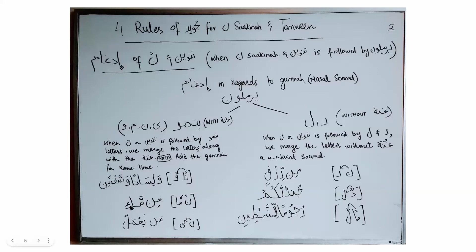In the next example, Min-ya-amal: when merging letter Noon with Ya, Ya and Noon letters coming after Noon Sakina or Tanween require merging along with the Gunna. I merge letter Noon with Ya, hold the nasal sound, and say: Min-ya-amal. For Min Nutufatin — merging letter Noon followed by another Noon — you hear the Gunna; hold it for some time and recite: Min Nutufatin.